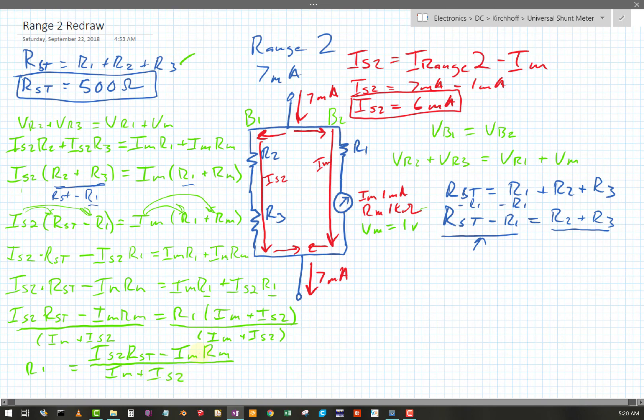Now you could plug in all your numbers right now and solve for R1. Interestingly, Is2 times R shunt total minus Im Rm. Well, that's Vm. And then, so look up here. So, Is2, or basically knowing this equation, if I add my meter current plus my shunt current, I'm back to the range current. This is Vm. Just to show it a little bit cleaner. R1 equals Is2 times the R shunt total minus Vm over Irange. Irange. Let's write that a little bit cleaner. Irange2. Okay, now I can plug in some numbers.